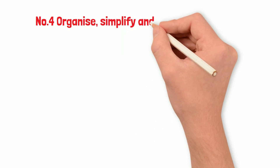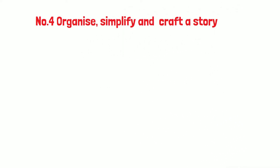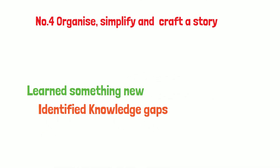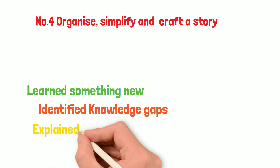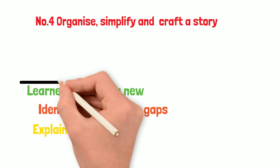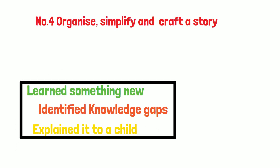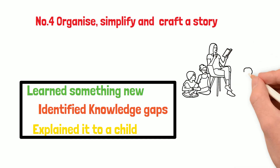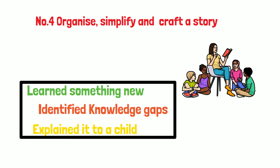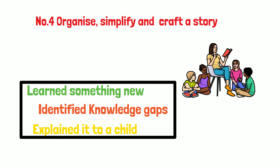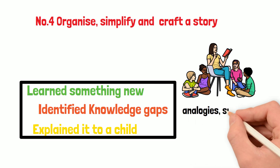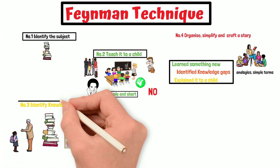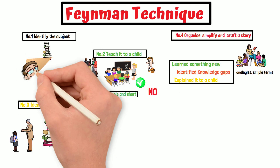Step 4: Organize, simplify, and craft a story. In the previous three steps, you have learned something new. You have identified the knowledge gaps and filled the voids while explaining it to a child. Now bring all the notes and pick up the most vital pieces of knowledge. Finally, gather the vital pieces and come up with a story. Once you make a story, pretend that you are in front of a class and start narrating the concepts as the story. This way you will realize the places where your story was not simple. Use analogies and simple terms to make it easy and understandable. After you complete all four steps successfully, you have mastered the topic you learned.